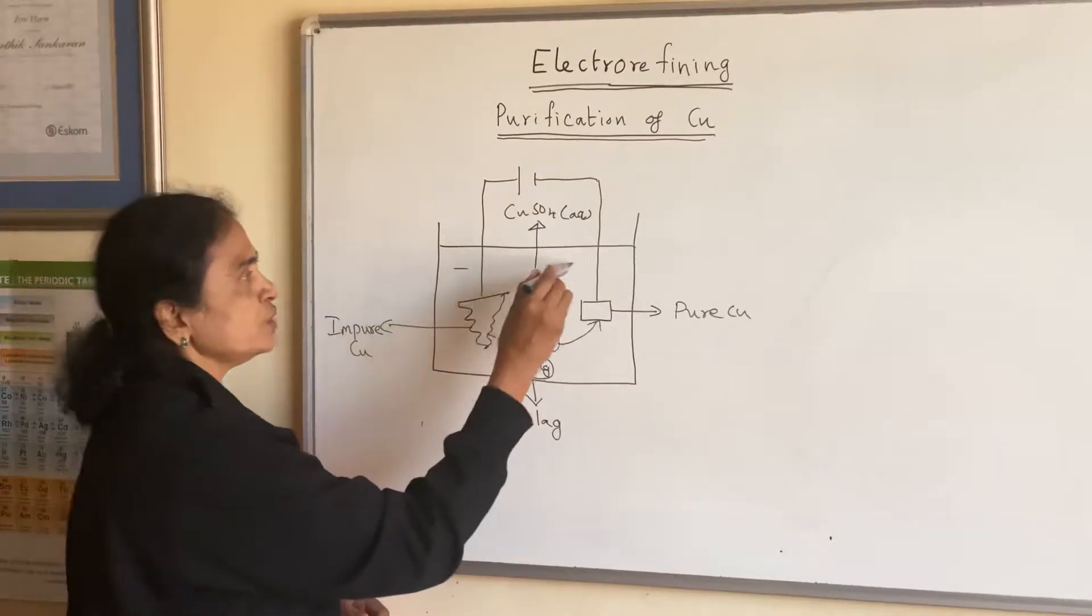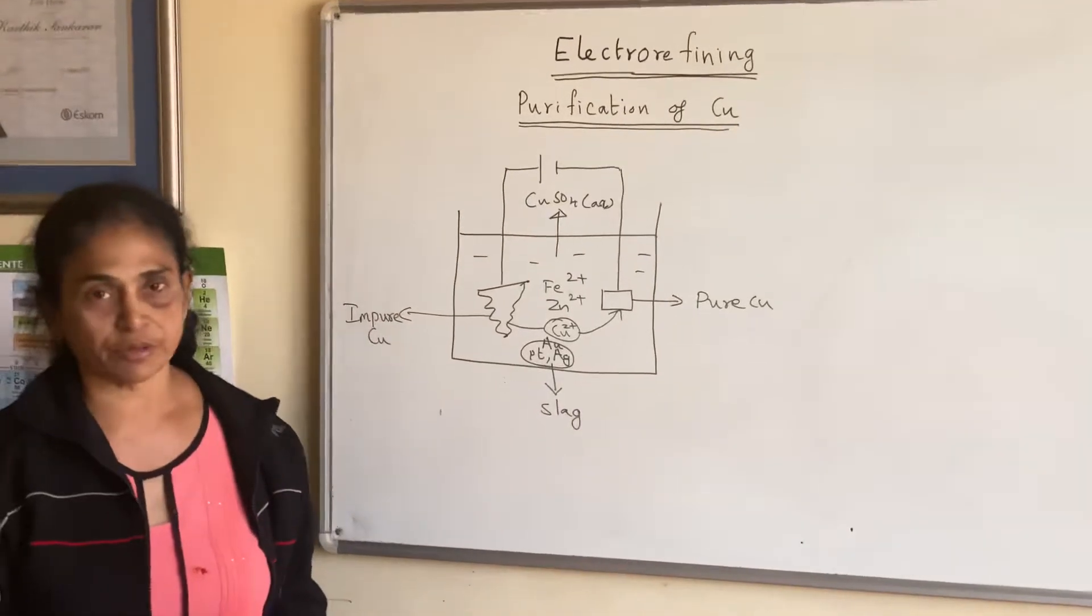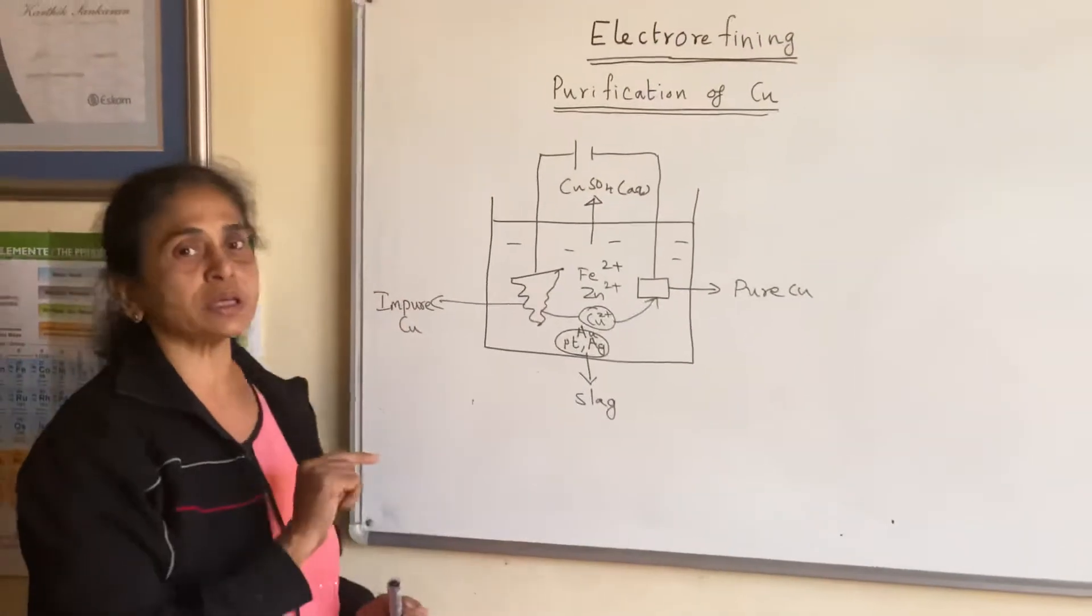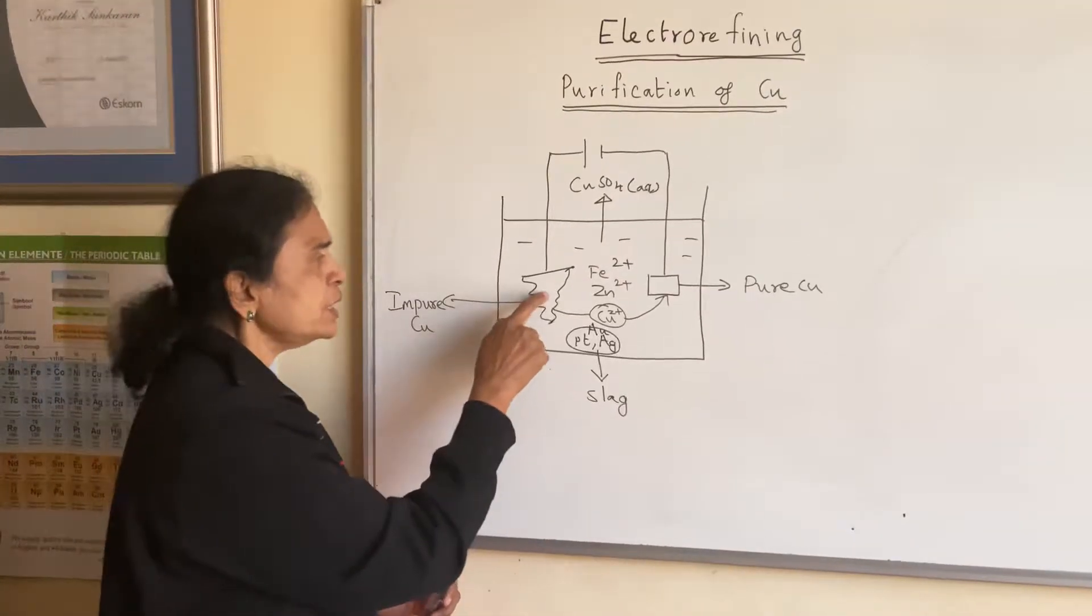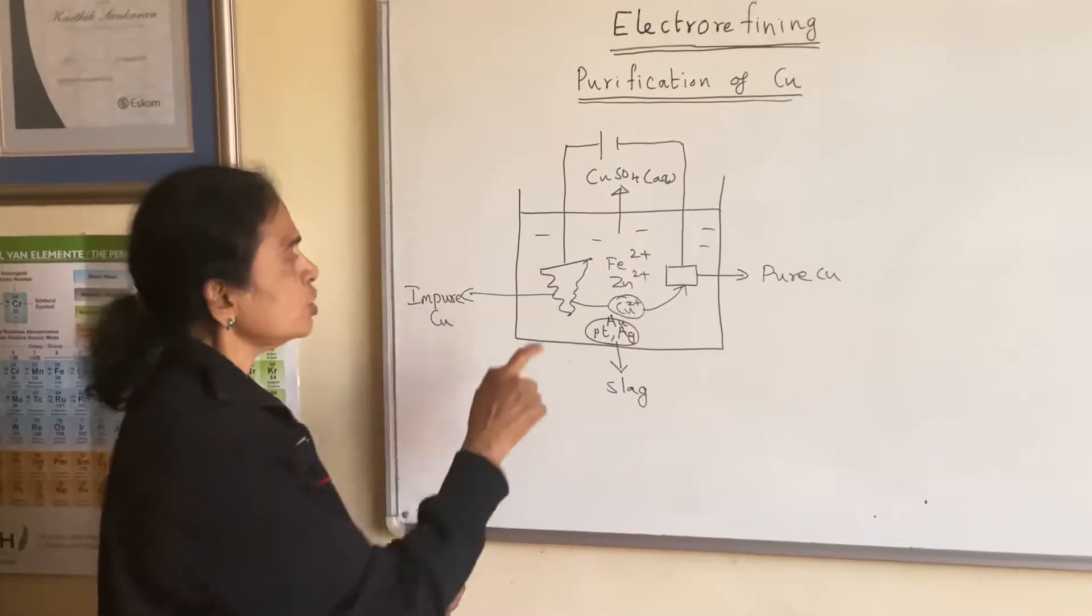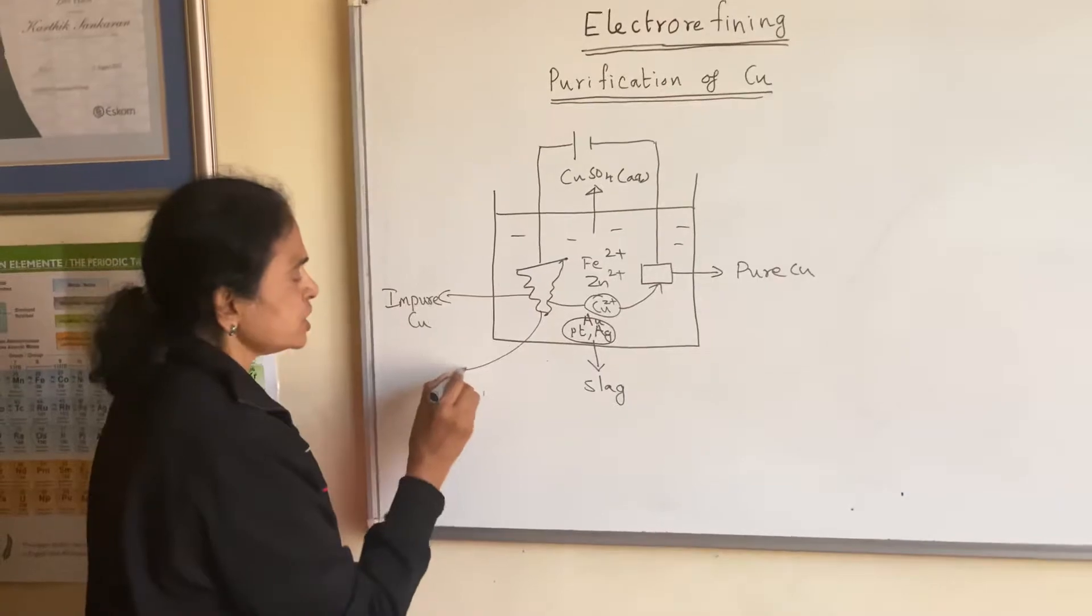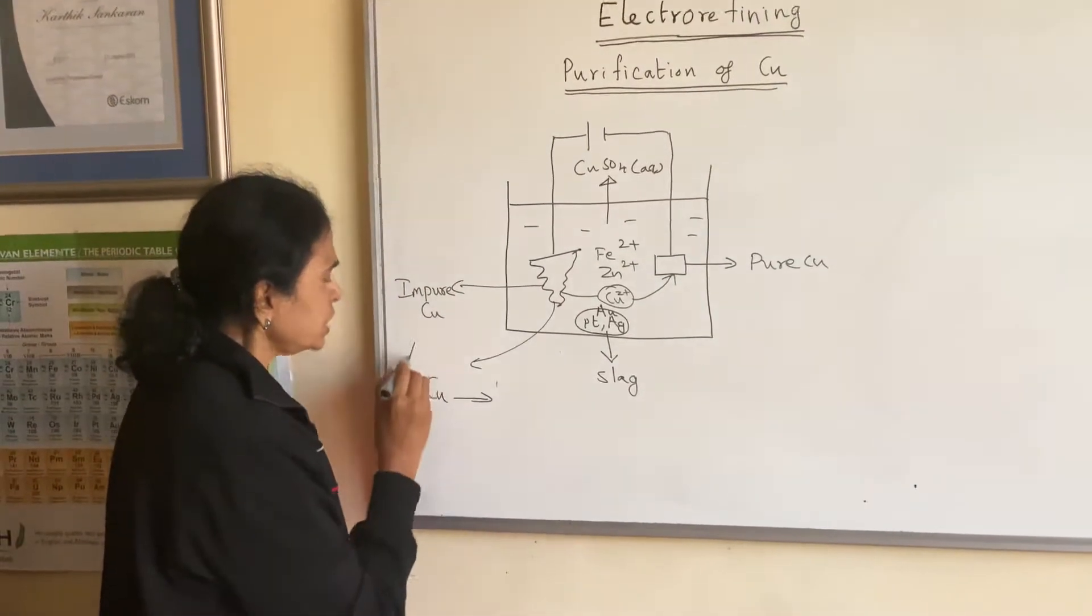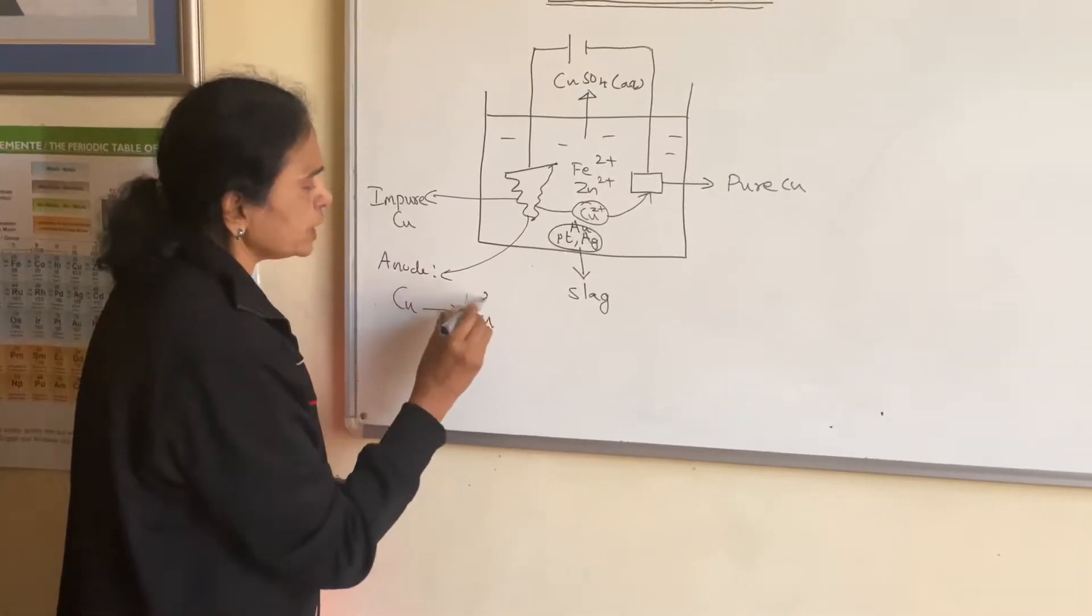This is a solution which is made up of copper sulfate. The electrolyte here is copper sulfate, so it has got copper two plus ions and sulfate ions. Then similarly, the copper will also undergo oxidation. It will undergo oxidation and the reaction that takes place at anode is: copper gives copper two plus plus two electrons.